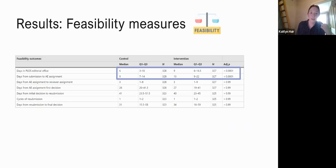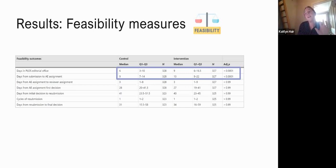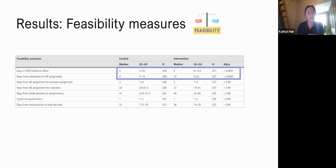We also looked at feasibility measures, since we did this in collaboration with a publisher and PLOS wanted to know how feasible it would be to implement something like this. Key findings were that the number of days a manuscript spent in the PLOS editorial office was higher in the intervention group, and the days from submission to academic editor assignment was also higher — probably just due to implementing the intervention and asking authors to submit a checklist, causing some delays.